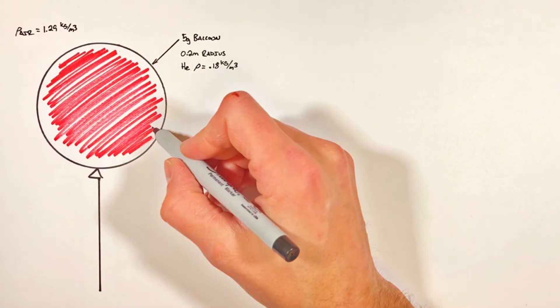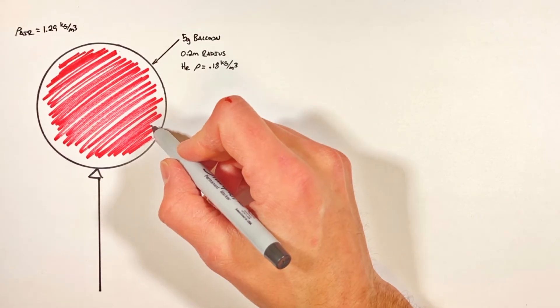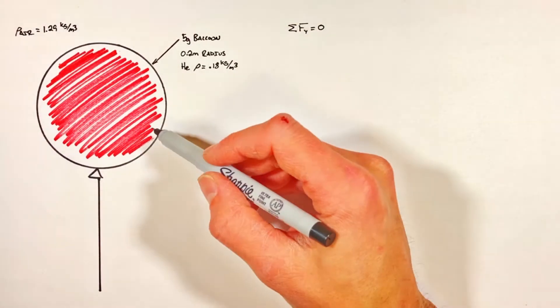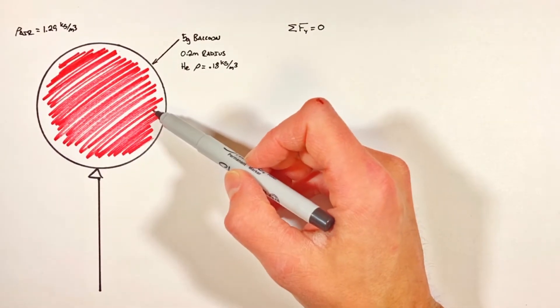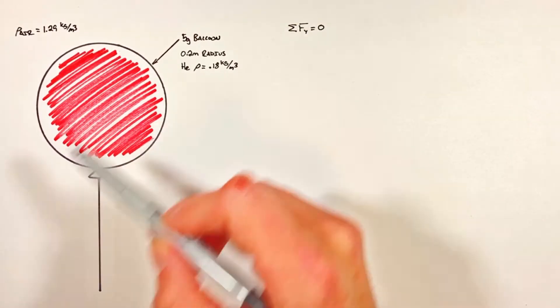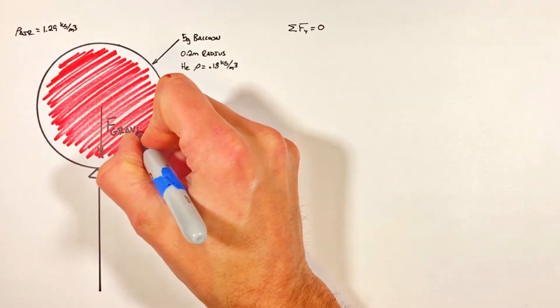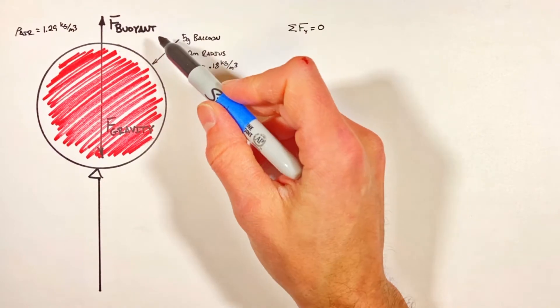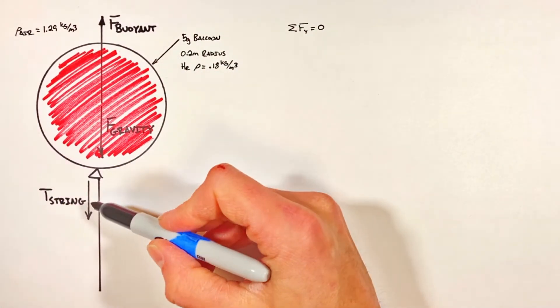In order to keep the balloon from floating away, the net force on the balloon vertically needs to be zero. Even though the net force is zero, there are in fact several forces acting on the balloon: gravity, the buoyant force, and the tension in the string.